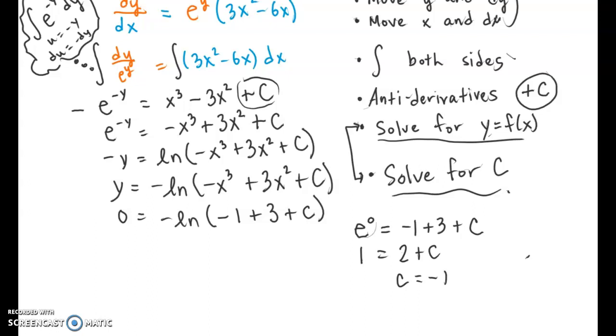Don't make the mistake of circling that and thinking you're done. Your final answer has to be y = -ln(-x³ + 3x² - 1). And that's your final particular solution to that separable differential equation. All right, thank you.